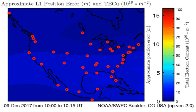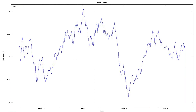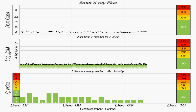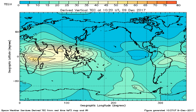Here we see the total electron content above the Earth. Anomalies in total electron content have sometimes preceded earthquakes below that area on Earth. And now we see changes in the speed of the rotation of the Earth, along with solar X-ray flux, solar proton flux, geomagnetic disturbances, and another graph of total electron content across the Earth.